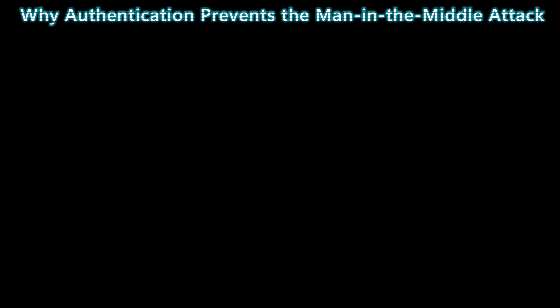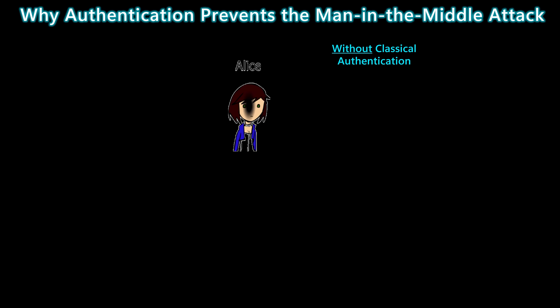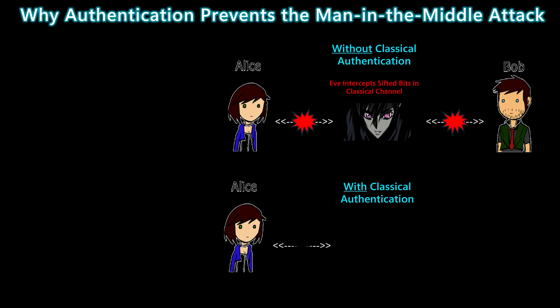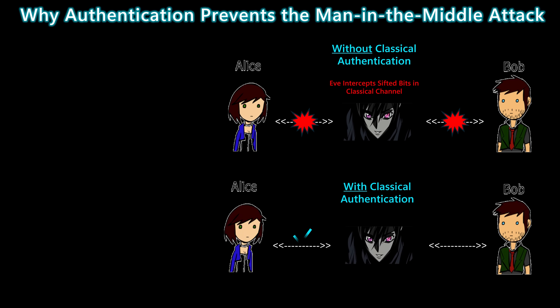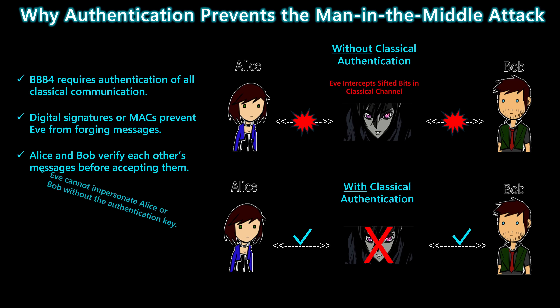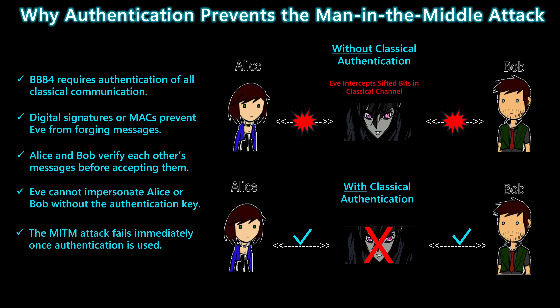In BB84, every message sent over the classical channel must be authenticated. Without authentication, Eve can intercept the sifting messages, impersonate Alice and Bob, and run two fake key exchanges in parallel. But once Alice and Bob use digital signatures or message authentication codes, Eve can no longer forge or modify any classical messages. Any message that doesn't verify is rejected immediately.